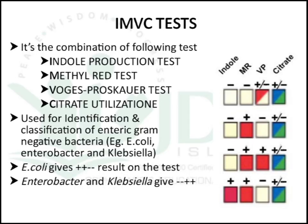The IMViC test is a combination of four tests: I for indole production test, M for methyl red test, V for Voges-Proskauer test, and C for citrate utilization test. It is used for identification and classification of enteric gram-negative bacteria like E. coli, Enterobacter, and Klebsiella. E. coli gives positive for indole and methyl red, and negative for Voges-Proskauer and citrate utilization. Enterobacter and Klebsiella give negative for indole and methyl red, and positive for Voges-Proskauer and citrate utilization.